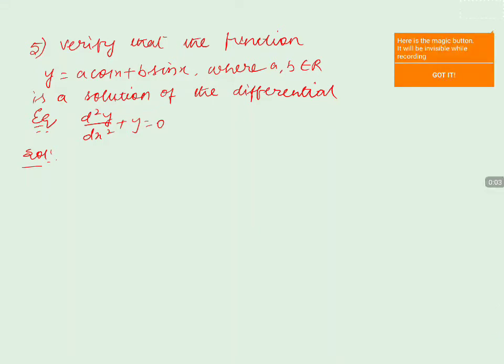Verify that the function y = a·cos(x) + b·sin(x), where a, b belong to ℝ, is a solution of the differential equation d²y/dx² + y = 0. The given function is y = a·cos(x) + b·sin(x).